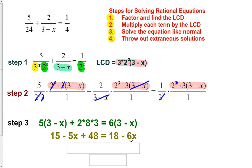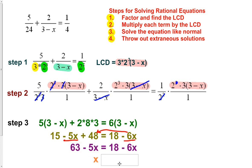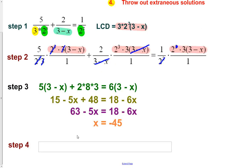Continuing along that path, let's add 6x to both sides, which effectively moves the 6x term over. Combining like terms by adding 6x to both sides, we're left with just an x on the left. Then we subtract 15 and subtract 48 from both sides. When we combine like terms, we end up with x equals negative 45.